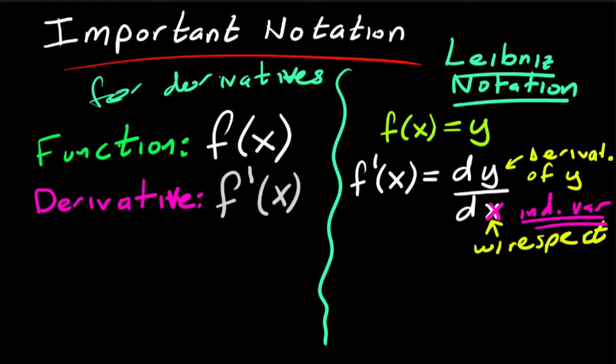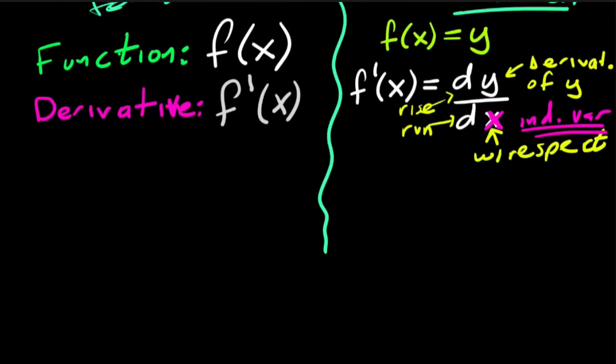The independent variable of the function is x, and we'll encounter different situations later. Even though the derivative isn't actually a fraction — remember, it's a limit of ratios — if you think of it as the slope of the tangent line, dy is the rise and dx is the run, and both are going towards zero. This notation breaks it up into its pieces, which will be useful later.